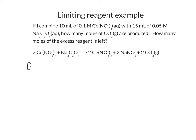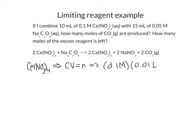In terms of the cerium(IV) nitrate that we're starting with, we know that we have a concentration and a volume, so we're going to use concentration times volume equals number of moles. Our concentration is 0.1 molar and we have 10 milliliters, or 0.01 liters, so we have 0.001 moles of cerium nitrate available.